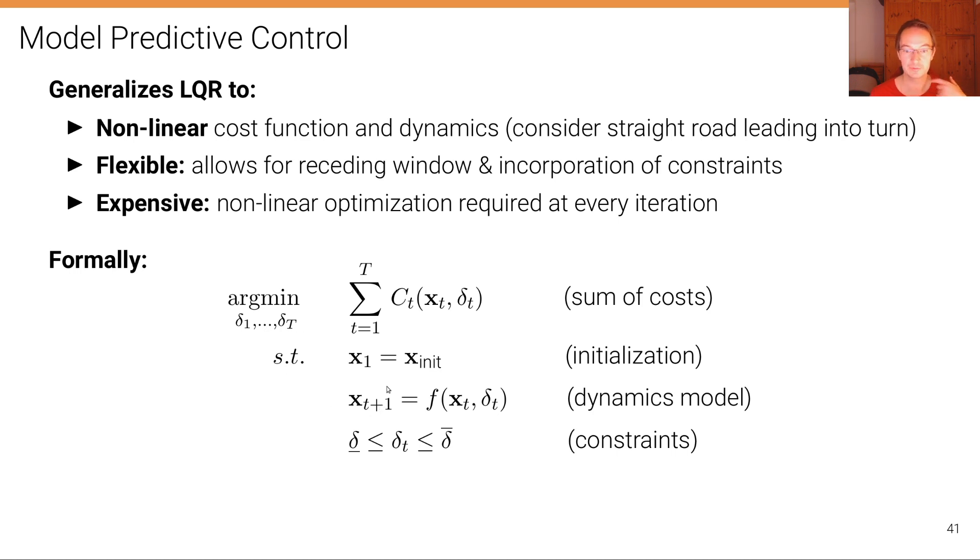You can think of this in terms of the future—we have a big computation graph, an unrolled computation graph. You unroll this optimization into the future.